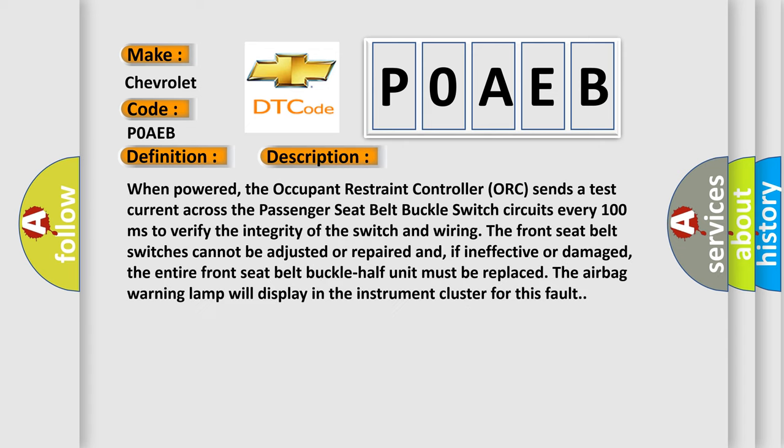When powered, the occupant restraint controller (ORC) sends a test current across the passenger seat belt buckle switch circuits every 100 milliseconds to verify the integrity of the switch and wiring.